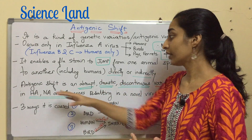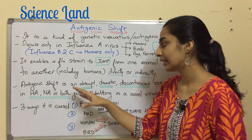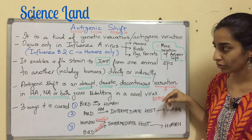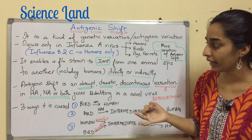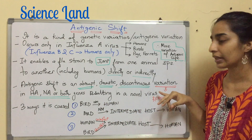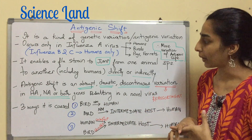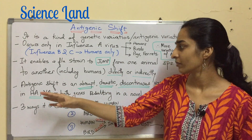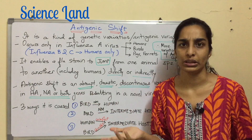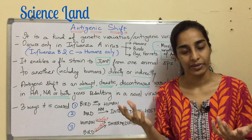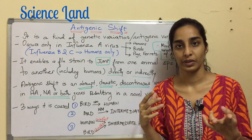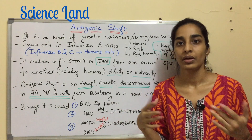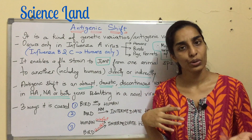Now let's define what antigenic shift is. It is an abrupt, drastic, discontinuous variation in HA, NA, or both genes, resulting in a novel virus. But before understanding this definition, we need to know what HA and NA genes are. Influenza A virus has two surface antigens: HA, which is hemagglutinin, and NA, which is neuraminidase.